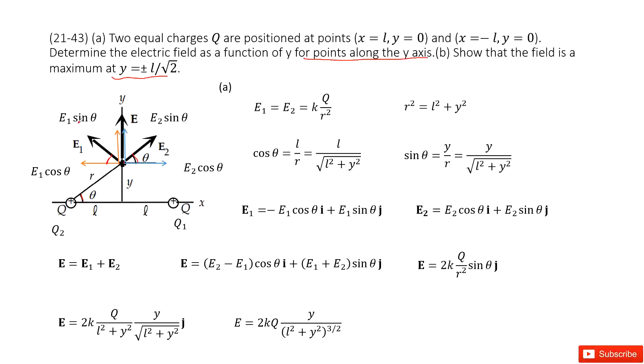Now we need to determine the distance r and angle theta. For distance r, we look at this triangle. The side length squared plus side length y squared equal to r squared. So r squared equals L squared plus y squared. We can write cosine theta as L divided by r, and sine theta as y divided by r. Now we get everything prepared.